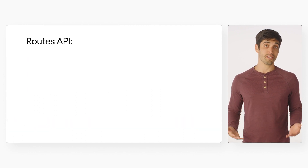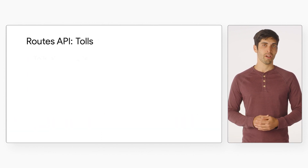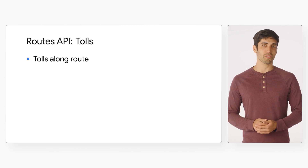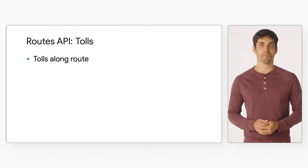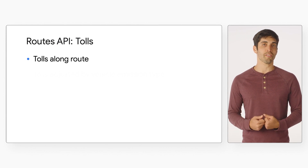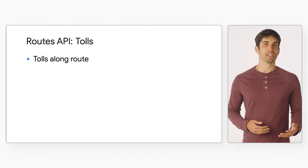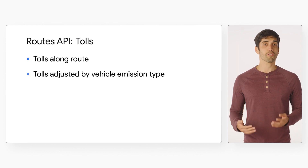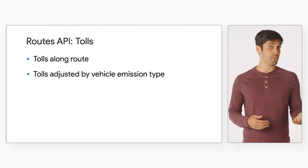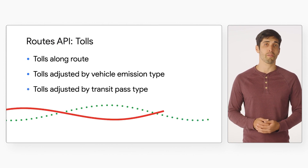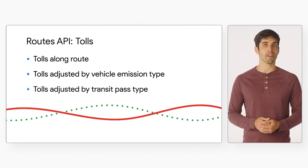And last but not least — toll calculations. With the Routes API, you can request the cost of tolls along a route for both directions and distance matrix requests, allowing you to show your users an estimate of the cost of a route, or take the cost into consideration in the routes you choose to display. You can even specify whether the vehicle is a special emission type, such as an electric vehicle, and whether the user has a local toll pass that provides a discounted rate, to make the toll calculation even more accurate.